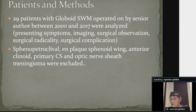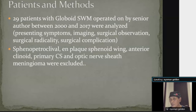To modify the Cushing classification, we analyzed the presenting symptoms, imaging studies, surgical observation, surgical radicality, and surgical complications in 29 patients with globoid sphenoid wing meningioma operated between 2000 and 2017.